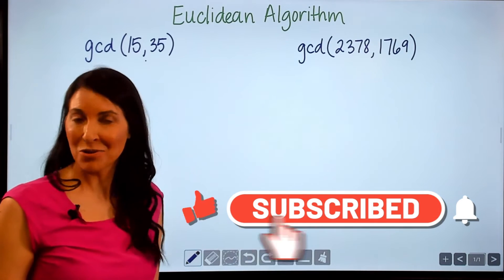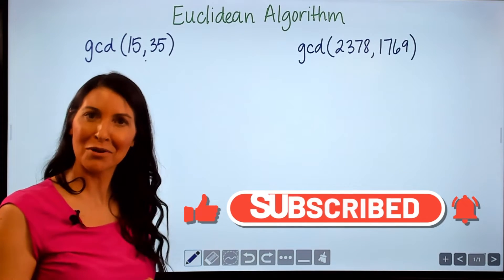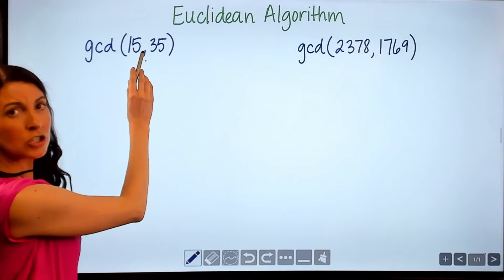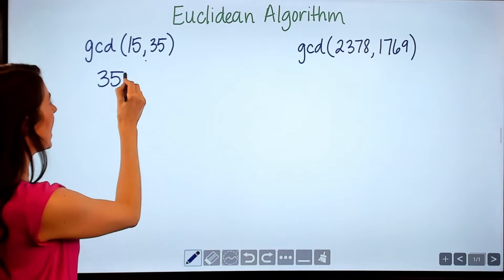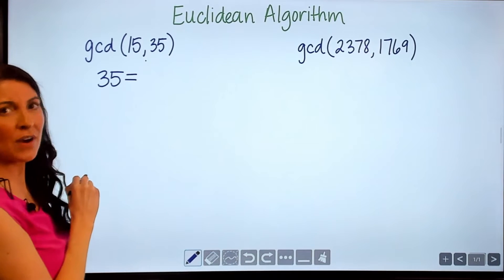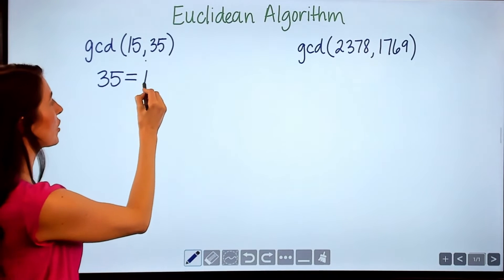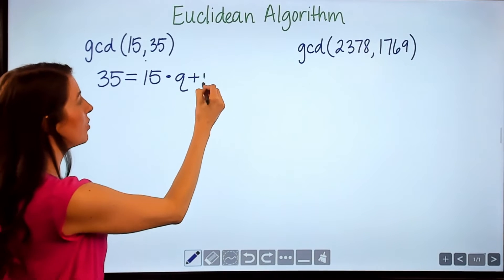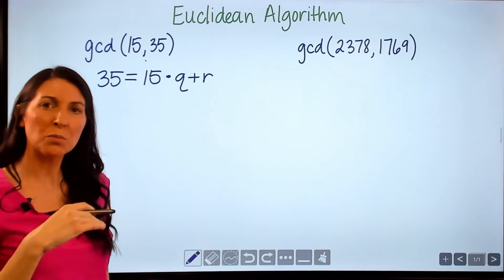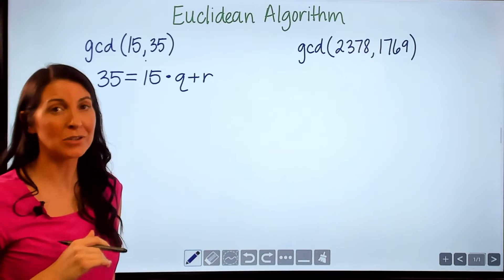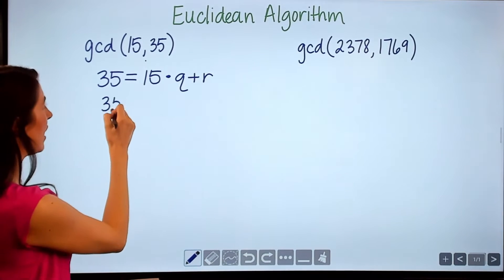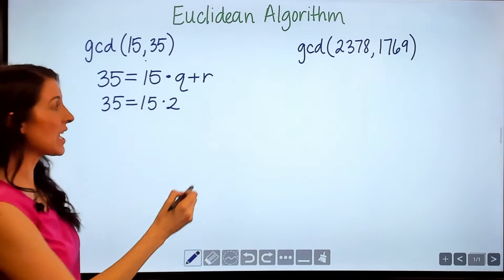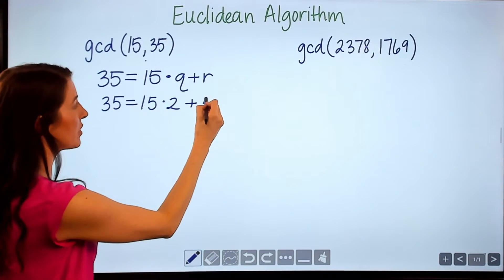Let me show you how we can use the Euclidean algorithm to find the number 5 as the greatest common divisor. What you do is start with the larger number and write that first. Then set 35 equal to the smaller number times some number q, and then have a remainder. So we can write 35 as 15 times 2, which gets us to 30, and then a remainder of 5.